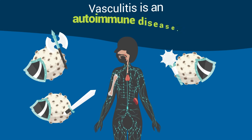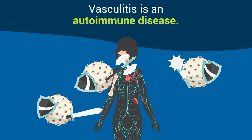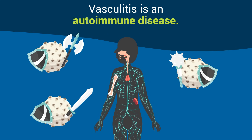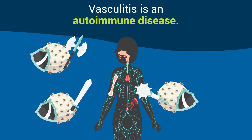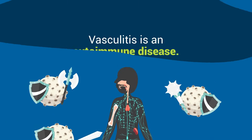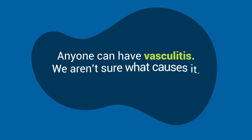Vasculitis is an autoimmune disease, which means in some forms of vasculitis your body's immune system is mistakenly attacking your own tissues. Anyone can have vasculitis — we aren't sure what causes it.